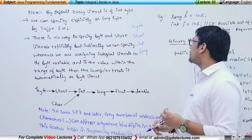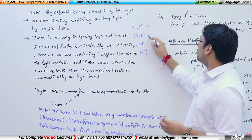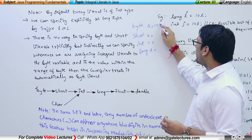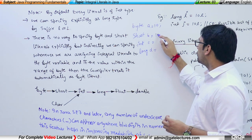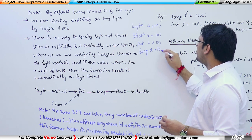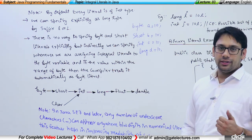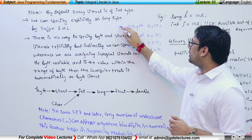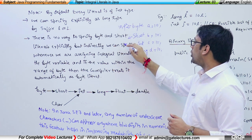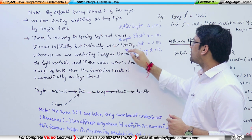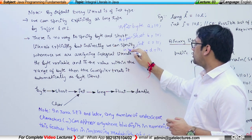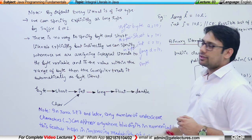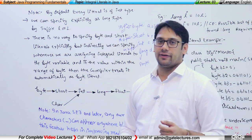Let us take four variables here: a, b, c, and d, and assign them some values. If I say byte a = 10, short b = 10, integer c = 10, and long d = 10, all of these are perfectly correct. The size of byte is 1 byte, short is 2 bytes, integer is 4 bytes, and long is 8 bytes. According to the size, the maximum and minimum number that can be stored inside these variables is decided.